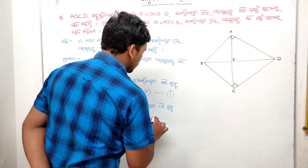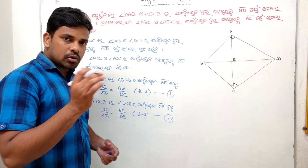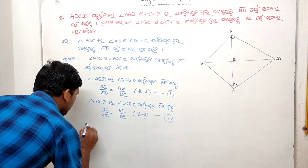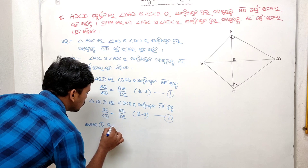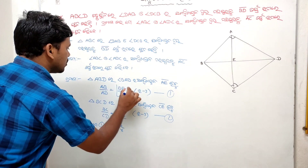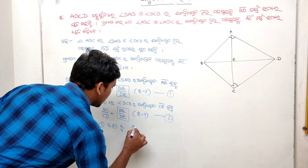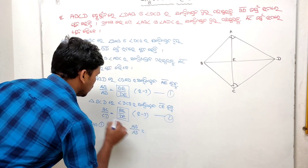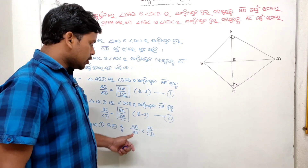So this is step 1 and this is step 2. From step 1 and step 2, we can see they are the same. From equations 1 and 2, both sides are equal. So AB by AD equals BC by CD.